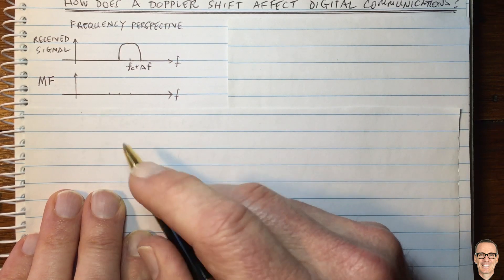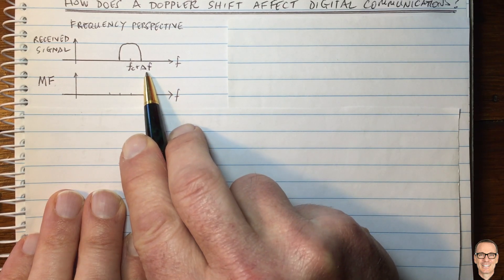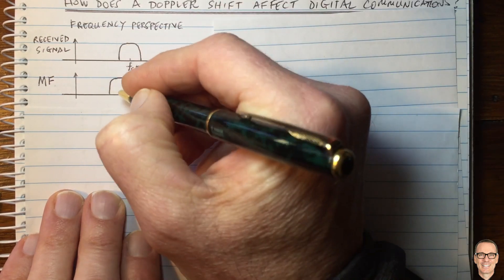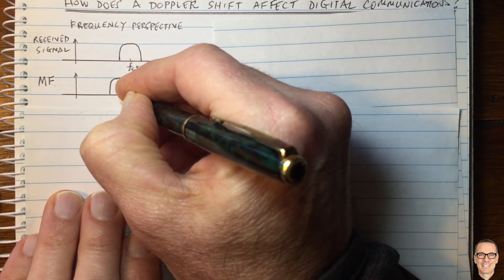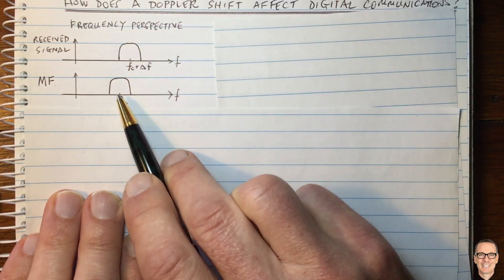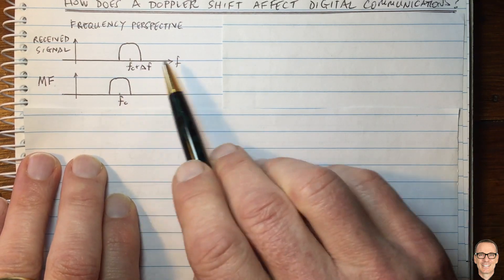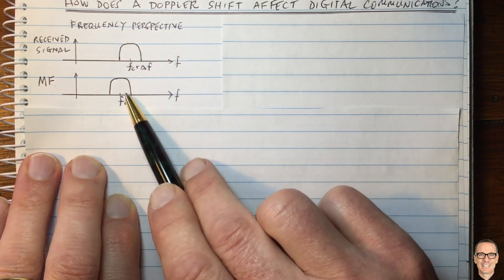So if the receiver does not know about the Doppler shift, then the filter, the matched filter in the receiver, will be centered at Fc. Now, because it's a filter, that means in the time domain it's a convolution, which means in the frequency domain it's a multiplication.